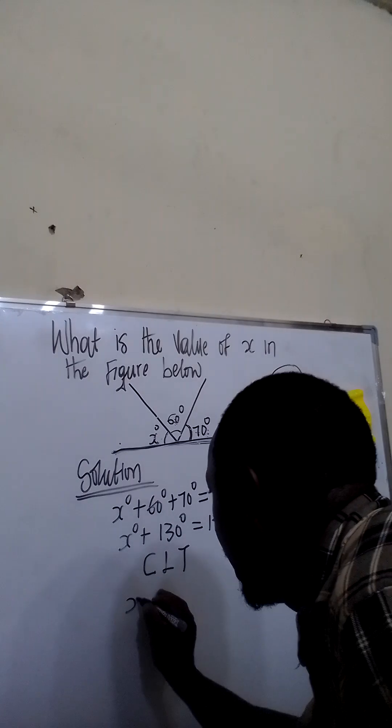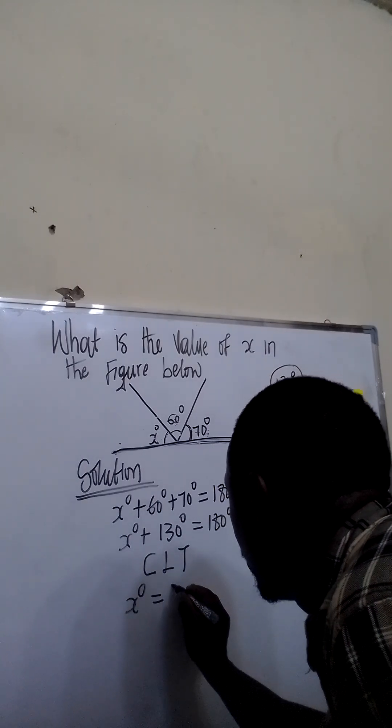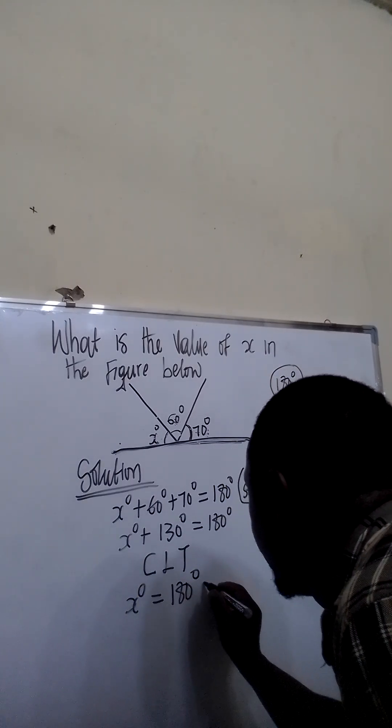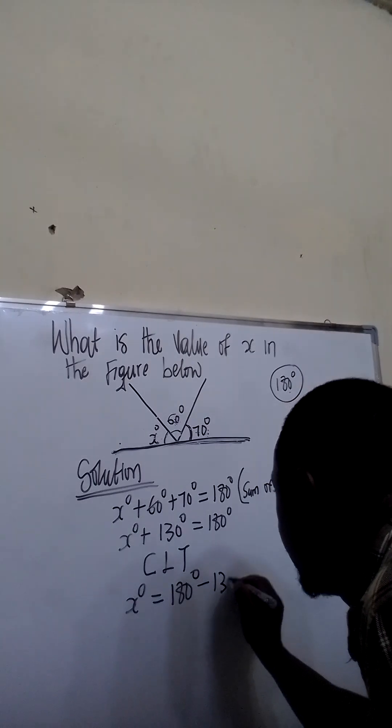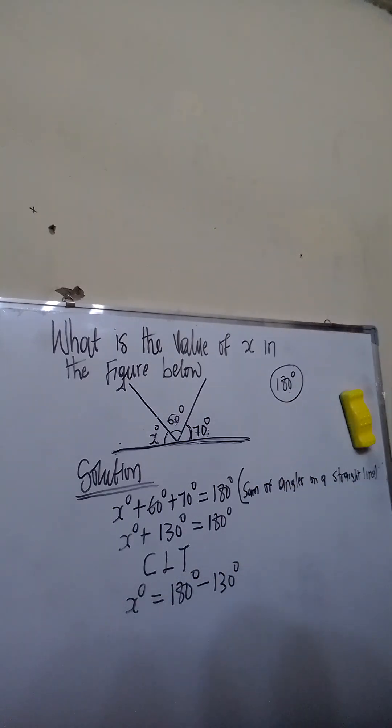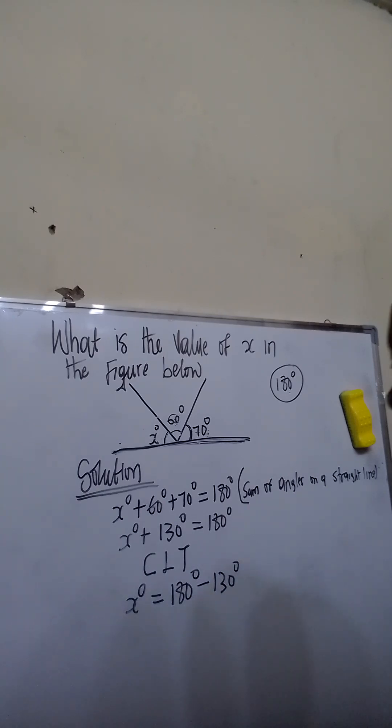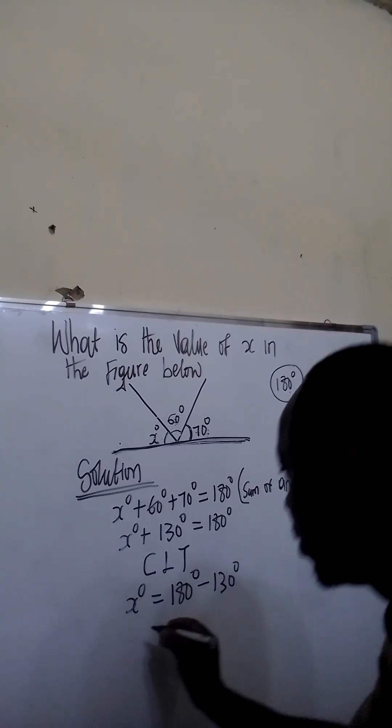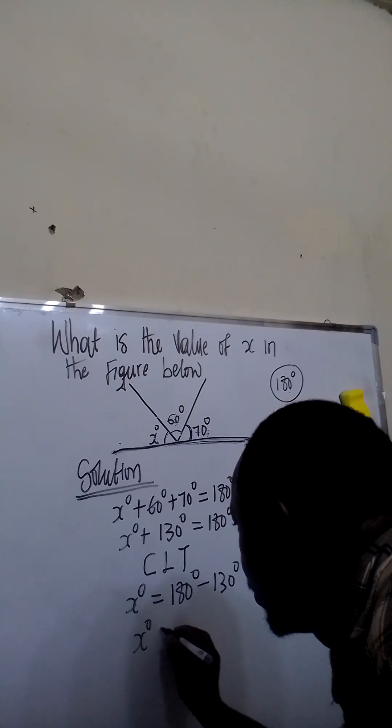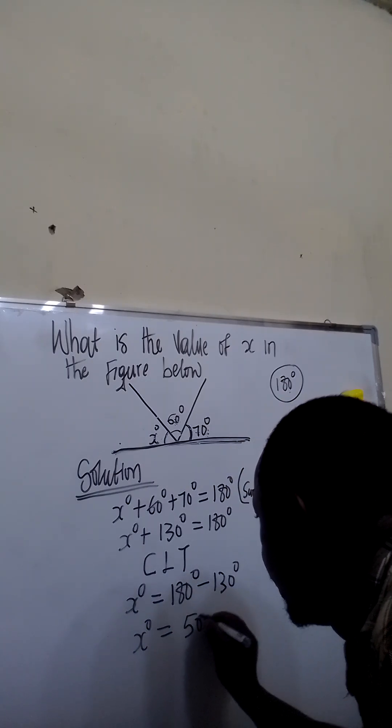This equation will become X degree equal to 180 degrees minus 130 degrees, which is 50 degrees. Therefore, X degree will be equal to 50 degrees.